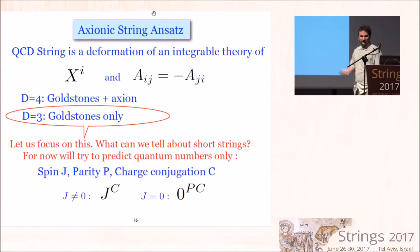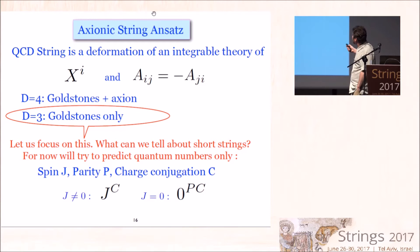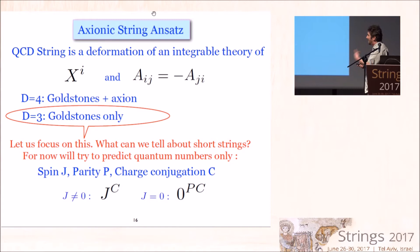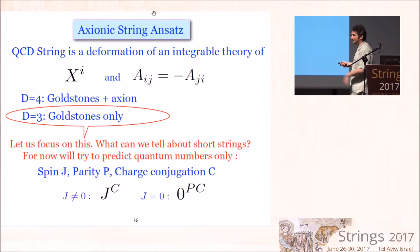I will focus on the d=3 case because it's simpler theoretically and there is more lattice data. What I want to do now is test the ansatz by looking at the spectrum of glueballs and asking whether they look like excitations of a theory in the equivalence class of the Nambu-Goto theory without additional worldsheet degrees of freedom. I won't try to predict the mass spectrum of glueballs, but I will check whether quantum numbers — which in three dimensions are spin, parity, and charge conjugation — look like quantum numbers of string excitations.